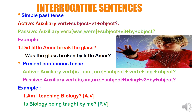Simple past tense in interrogative sentence: 'did' is the past tense auxiliary verb; use 'was' or 'were' based on the subject. In active voice: auxiliary verb plus subject plus V1 plus object. In passive voice: auxiliary verb (was/were) plus subject plus V3 plus 'by' plus object. Example: 'Did little Amar break the glass?' becomes 'Was the glass broken by little Amar?' — 'was' because 'glass' is singular. 'Break' changes to 'broken', the V3 form.